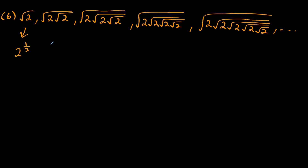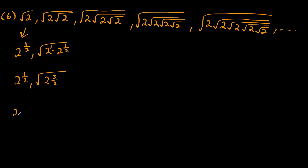The second term is the square root of two times two to the one half. Inside the radical, we have two to the first times two to the half, which adds to two to the three halves. Then taking the square root — raising to the one half — means multiplying exponents: three halves times one half gives three fourths. So the second term is two to the three fourths power.